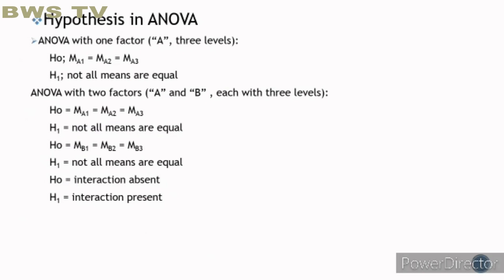ANOVA with two factors, A and B, each with three levels. The null hypothesis for A is that all A levels are equal, and the alternative is that not all means are equal. The null hypothesis for B is that all B levels are equal, and the alternative is that not all means are equal. The null hypothesis for the interaction of A and B is that interaction is absent, and the alternative hypothesis is that A and B interaction is present.